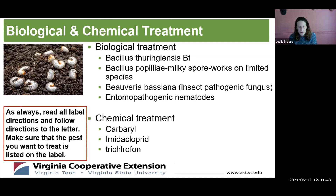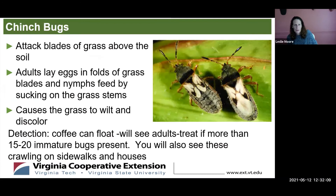If biological treatments fail and you're being taken over, you can use chemical treatments including carbaryl, imidacloprid, and trichlorfon. Read the label to make sure it will get the type of beetle you're trying to eliminate, and follow the label to the letter. Also, turf aeration will kill up to 40% of grubs, so when in doubt, aerate.